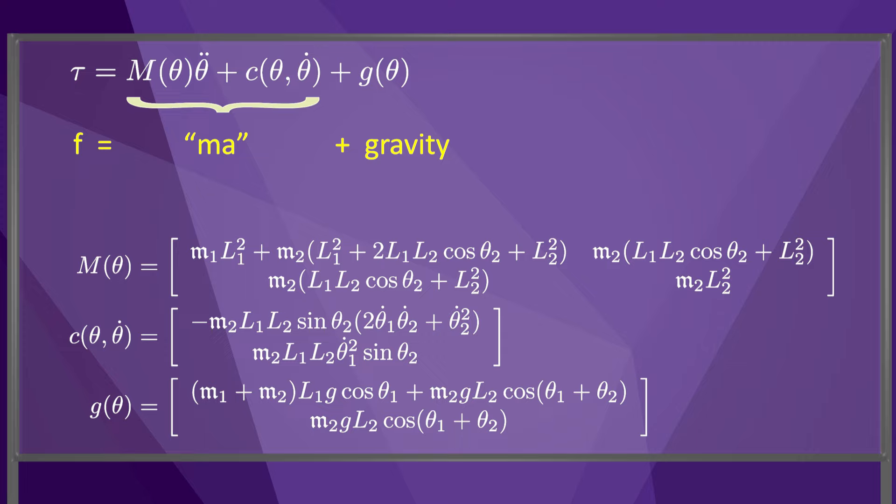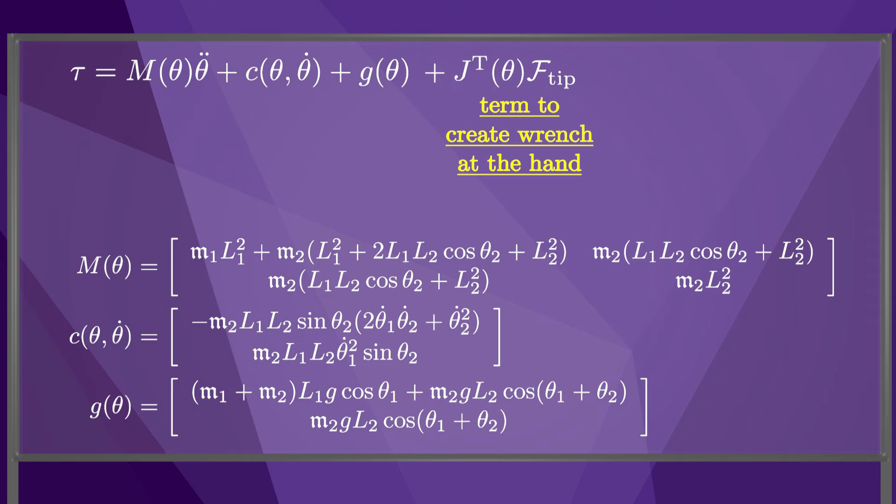There is one more term we could add to the right-hand side, the Jacobian transpose times Fₜᵢₚ, where Fₜᵢₚ is the wrench that the end effector applies to the environment. We learned about this term in Chapter 5. In the next video, we'll take a closer look at velocity product terms.